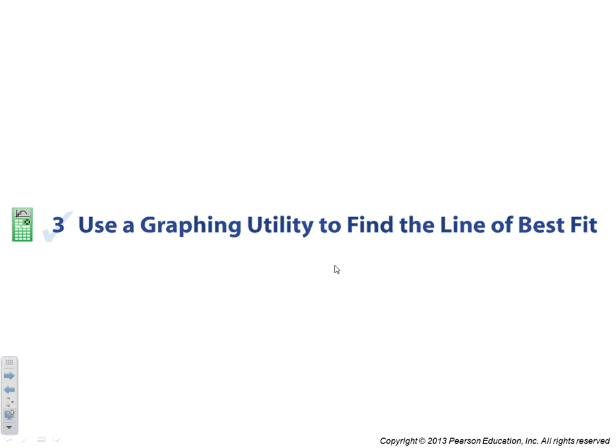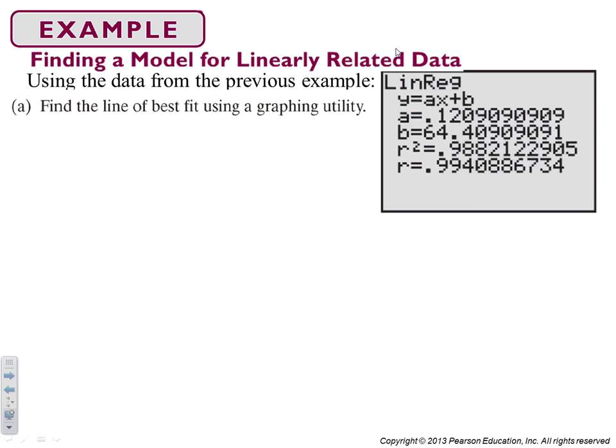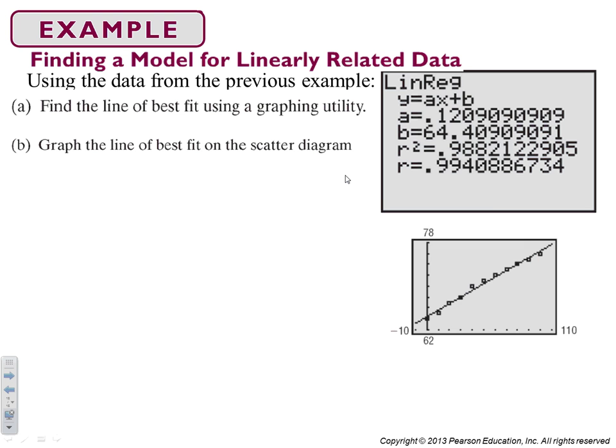All right, now we're going to put it in the hands of the graphing calculator to find the line of best fit. So we're going to use the data from the previous model and find the line of best fit. When you do this on your calculator, you use the linear regression function. So you put your data, you use linear regression, and it gives you the slope and the y-intercept. And then you can see the line of best fit.